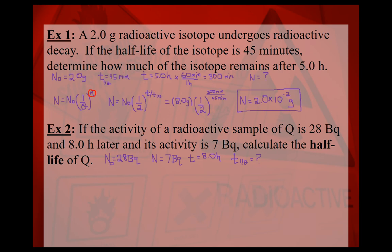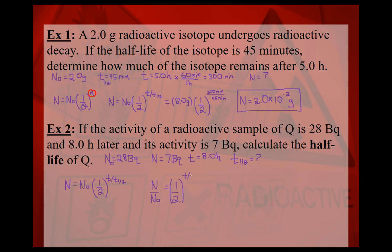Using the expanded equation: N = N₀ × (1/2)^(T/T½). We need to solve for T½. Mathematically, isolating this exponent would normally require logarithms, but since our learning outcome specifies non-logarithmic calculations, we have a workaround. We divide both sides by N₀: N/N₀ = (1/2)^(T/T½). Plugging in: 7/28 = (1/2)^(8.0 hours / T½).